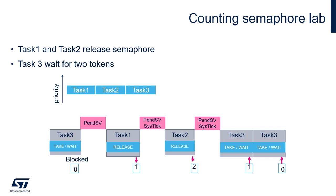In case task 3 would have higher priority than task 1 and task 2, the situation would look a bit different. Just after the release of the first token there would be a context switch from task 1 to task 3, as the first token has been released, and then task 3 will be moved again into blocked state waiting for the next token. After this, either task 1 would continue its job or there would be a context switch to task 2. Please notice that there is no single function which is waiting for more than one semaphore.